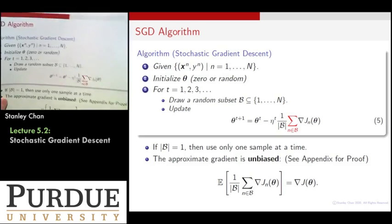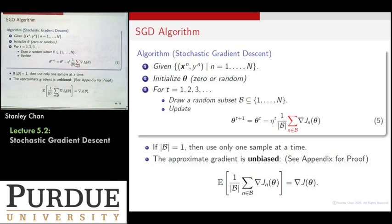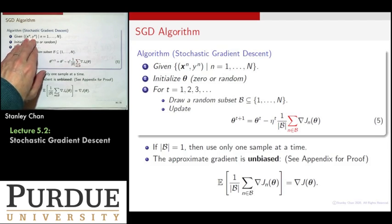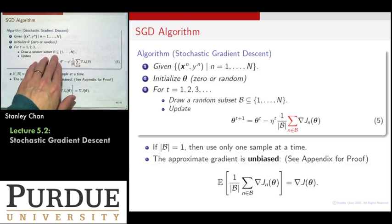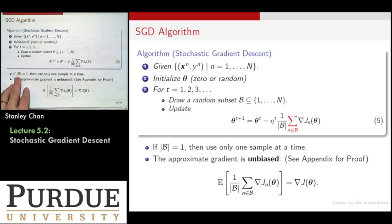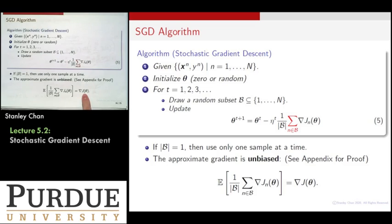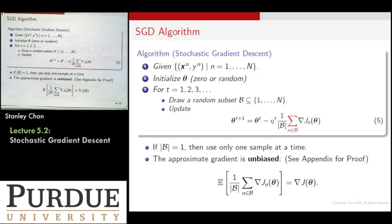The SGD algorithm works as follows: you have dataset x_n and y_n (x is your image, y is your label), you initialize your parameter — either randomly or to zero — and then at each iteration you draw a random subset B from {1, ..., N} and perform the update. You can go to the extreme where B has only one element. You can also show that this approximate gradient is unbiased: the expectation of the stochastic gradient equals the full gradient. A proof of this unbiasedness can be found in the appendix of the slides.